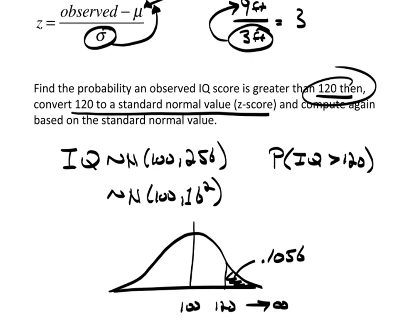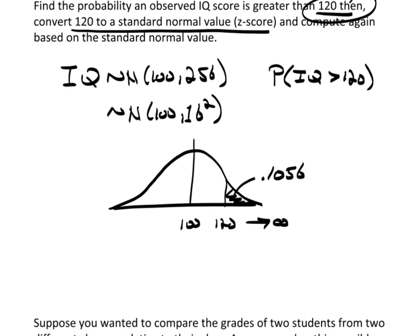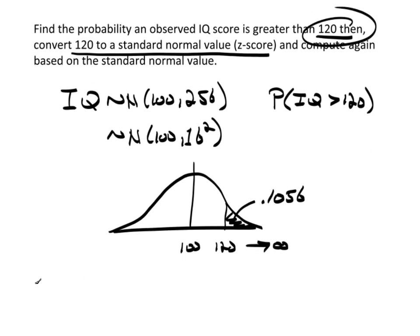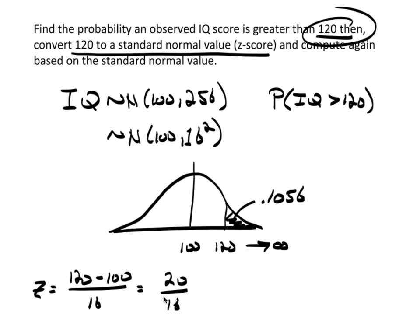Now let's convert this to a z-score. z will be the observed value, which is 120, minus the mean, which is 100, divided by the standard deviation, which is 16. So 120 minus 100 is 20 — that's the distance between them — divided by 16. The number of times 16 goes into 20 is the number of standard deviations, which is 1.25.